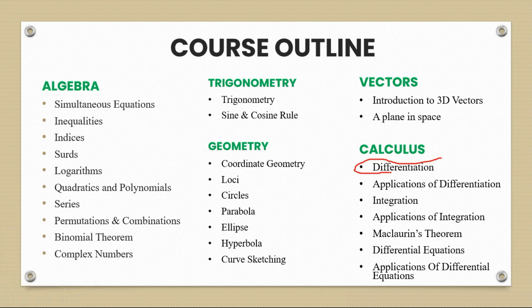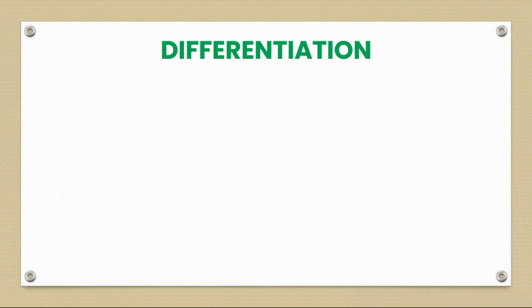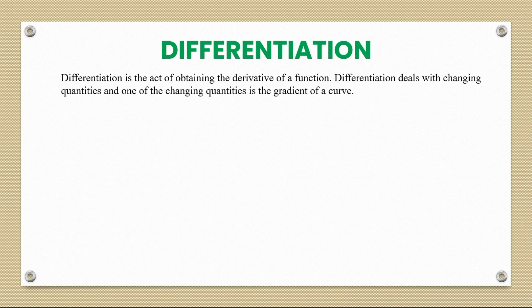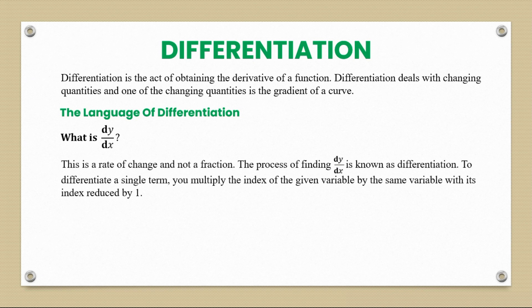So today's topic is differentiation, and this is the core section of pure mathematics in A-level math. Differentiation is the act of obtaining the derivative of a function. It deals with changing quantities, and one of those changing quantities is the gradient of a curve. The most important term we need to get used to is dy/dx, which is a rate of change and not a fraction. The process of finding dy/dx is known as differentiation.